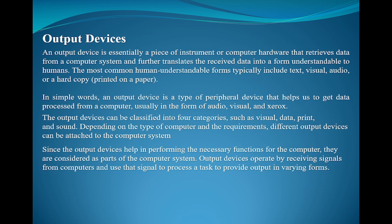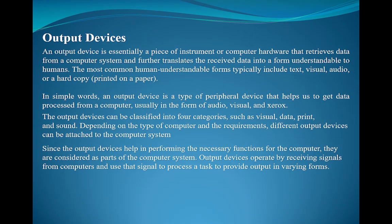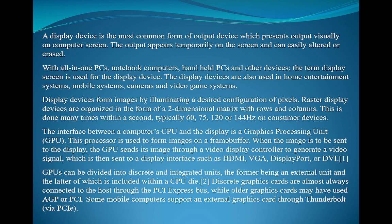An output device is essentially a piece of equipment or computer hardware that retrieves data from a computer system and further translates the received data into a form understandable to humans. The most common human-understandable forms include text, visual, audio, or hardcopy. An output device is a type of peripheral device that helps us get data processed from a computer, usually in the form of audio or visual. A display device is the most common form of output device, presenting output on a computer screen. The output appears temporarily on the screen and can easily be altered or erased. With all-in-one PCs, notebook computers, handheld PCs, and other devices, the term display screen is used for the display device.